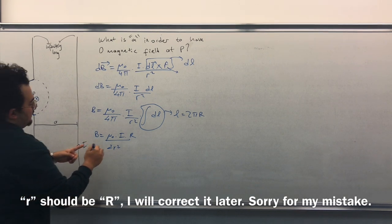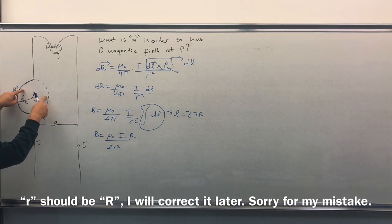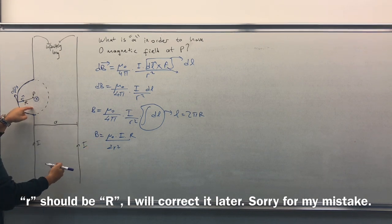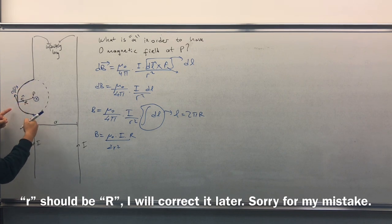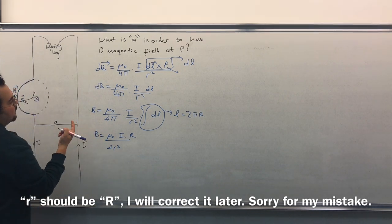But remember this is for the entire circle. So we need to divide this by 2 in order to find the effect of the semicircle.